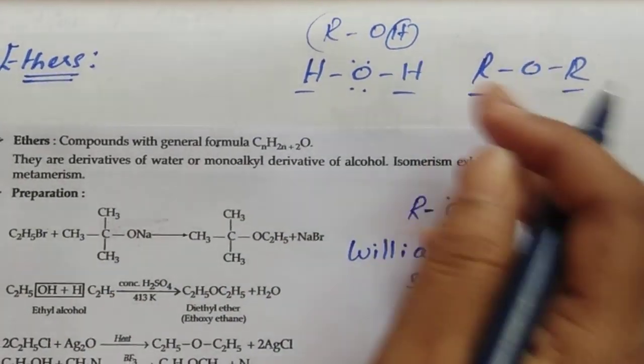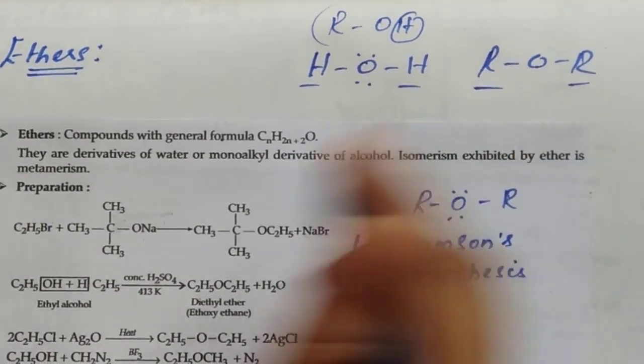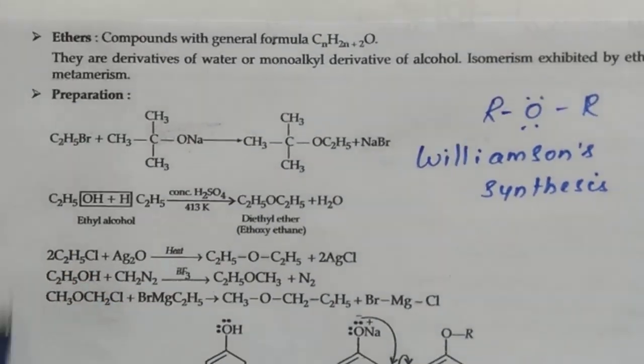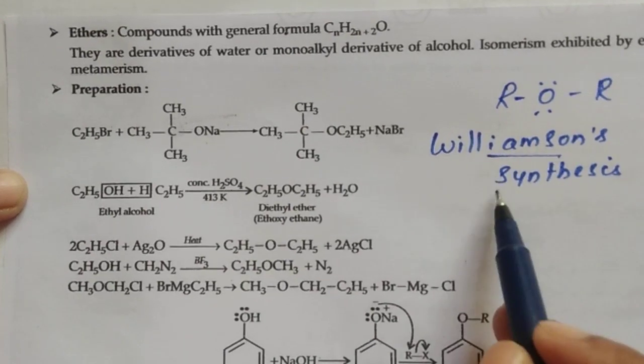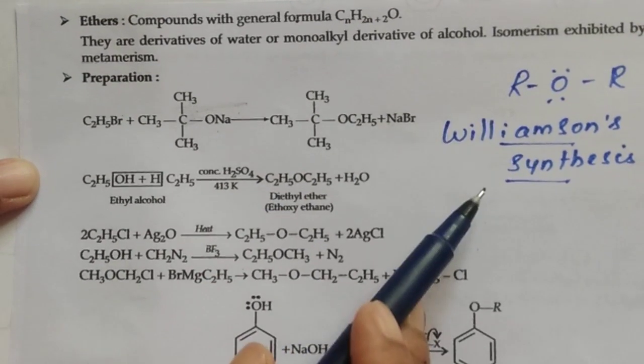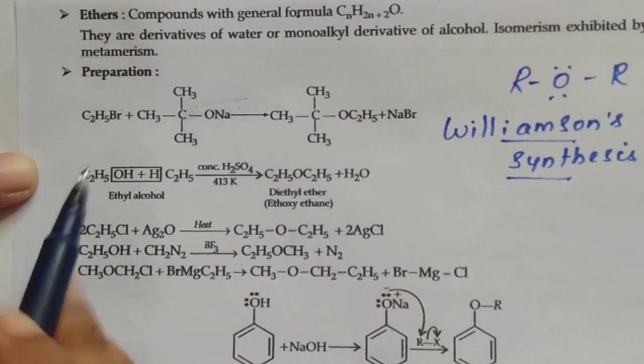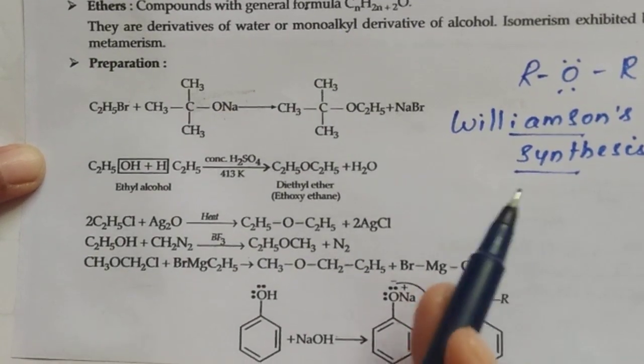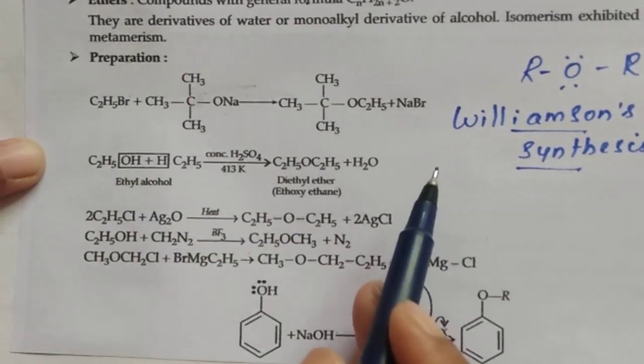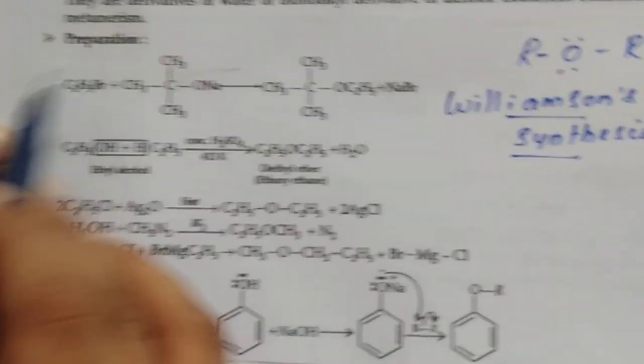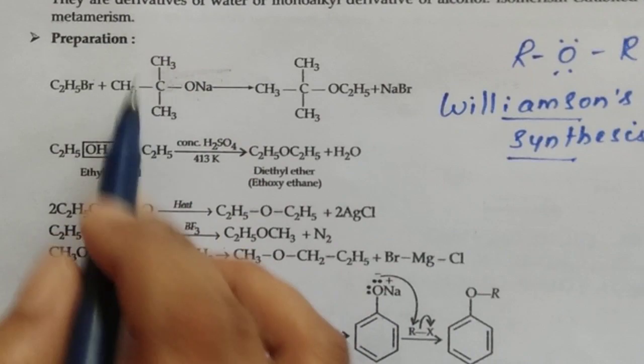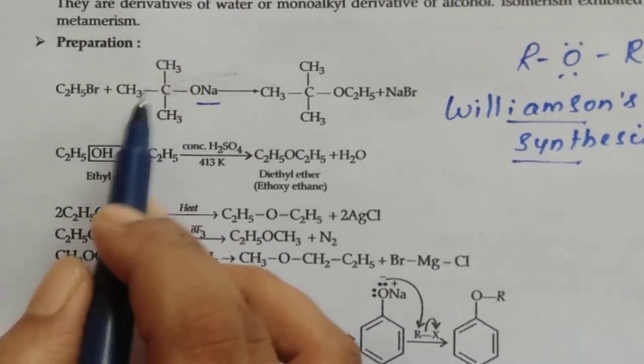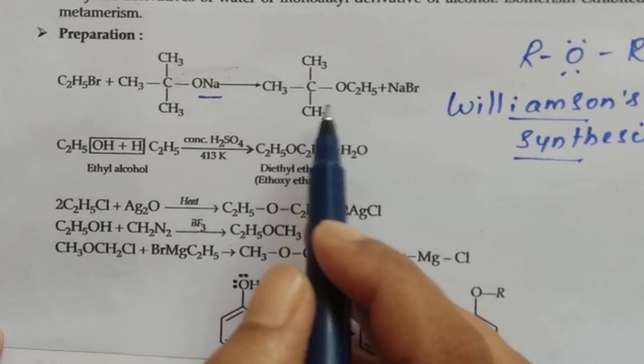Number of alkyl groups varies in the same functional group, that is known as metamerism. So preparation of ethers, friends. Here it is a well-known name reaction, Williamson synthesis. We already discussed this reaction in various categories like haloalkyl, aryl in the previous chapter also. RX reacts with sodium alkoxide. In general, here tertiary group is there, sodium alkoxide. It gives ethers.